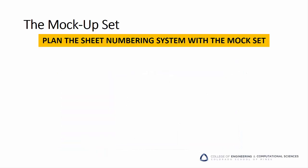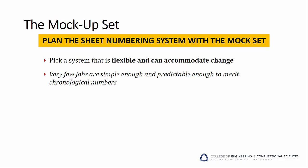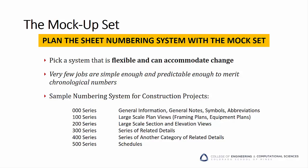With this initial collection of thumbnail sketches in hand, the team decided on a numbering scheme. The key to this step is to pick a flexible numbering scheme that can accommodate change gracefully. This means you'll need to suppress your desire for chronological numbers and come up with a better plan. A typical numbering scheme for construction projects goes something like this: the 00 series is used for general information, notes, and abbreviations; the 100 series is used for site plan views; the 200 series is used for section and elevation views of the site; and the 300 and above series are used to denote other categories and related details.